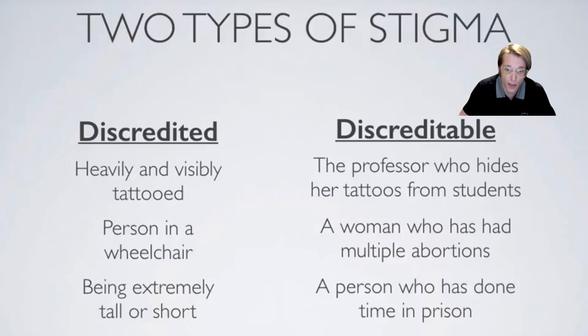The other type of stigma is the discredible one, where we may not be able to immediately tell that there is a stigma attached to a person. The professor who hides her tattoos from her students is an example of discredible stigma. Neurodivergencies such as mood disorders that are not visible — either through treatment or just not obvious — are another example. If they are exposed and people learn of them, it changes everything. Women who have had several abortions would likely be harshly discredited if others were to know, because it goes outside social norms — yet you can't tell by looking at someone.